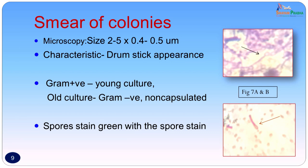A smear from the colonies was also made. On microscopic examination the organism was again seen to be a long slender organism, 2 to 5 microns by 0.4 to 0.5 microns, with the typical drumstick appearance seen in the primary smear. Some were Gram-positive in young cultures; in older cultures they became sometimes Gram-negative and were not capsulated. Using spore stain with malachite green and safranin, the spore took up the green stain while the bacterial body took up the pink stain.